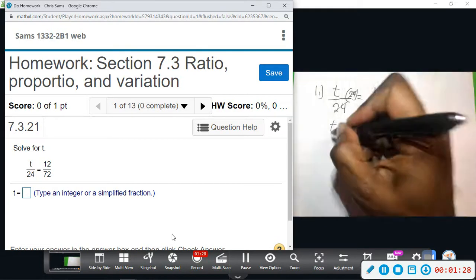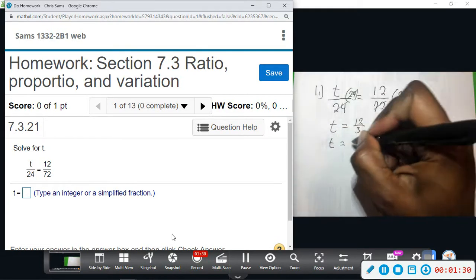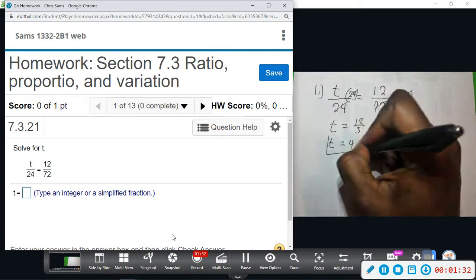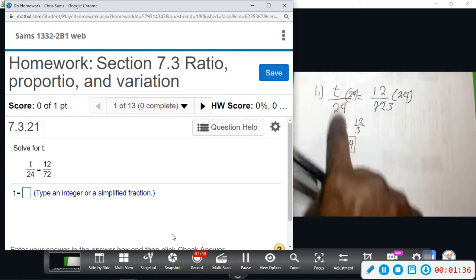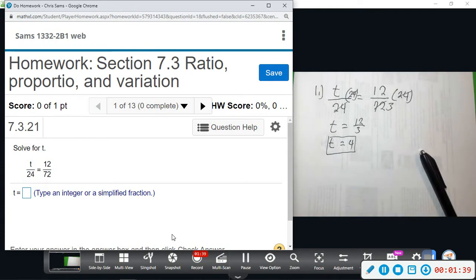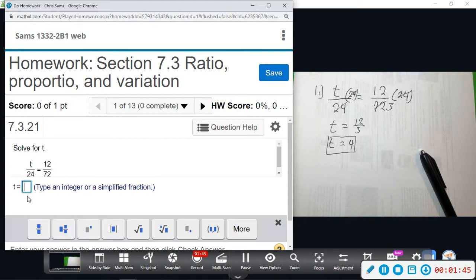And 12 divided by three gives us four, so t equals four. What you should do is plug it in and reduce to check, just to make sure. If you do four divided by 24, see what you get. 12 divided by 72, see what you get. If they're both equal, then you know you have done this correctly.